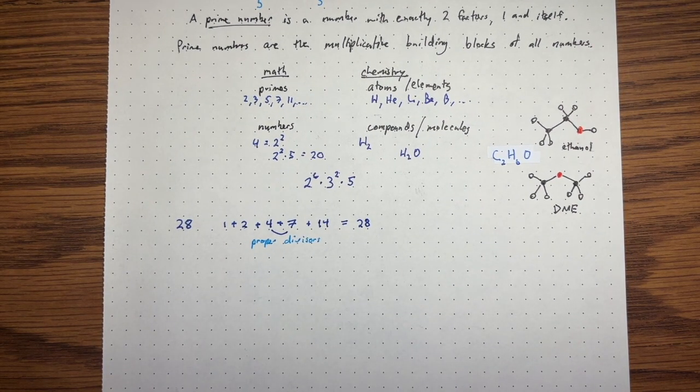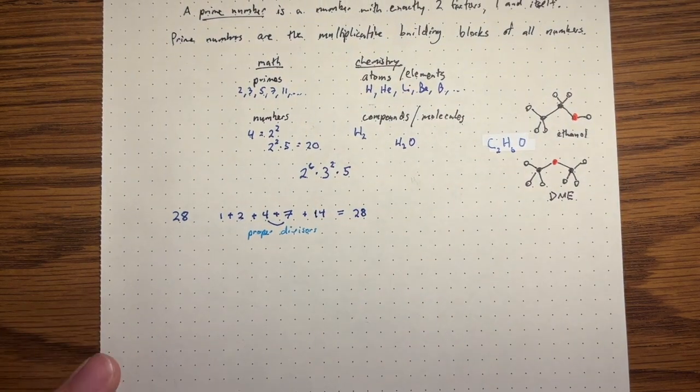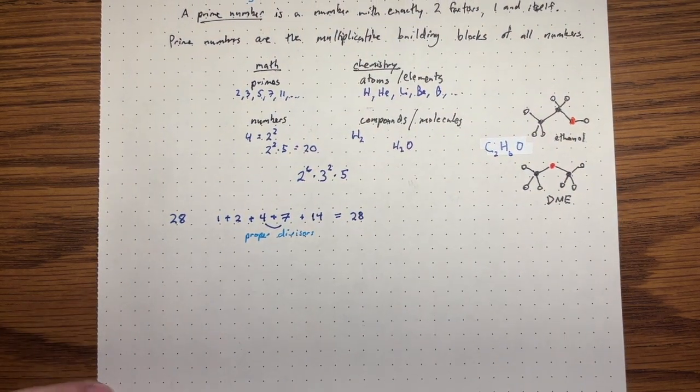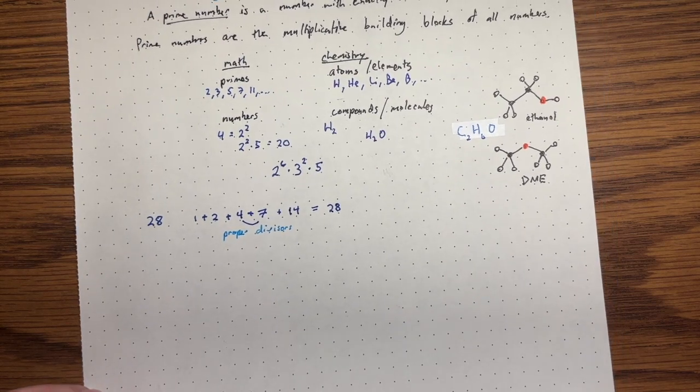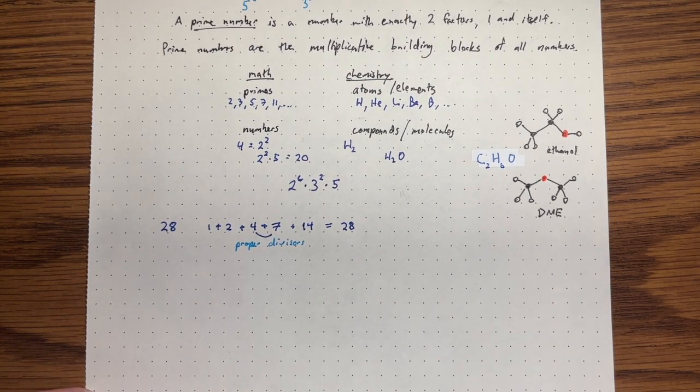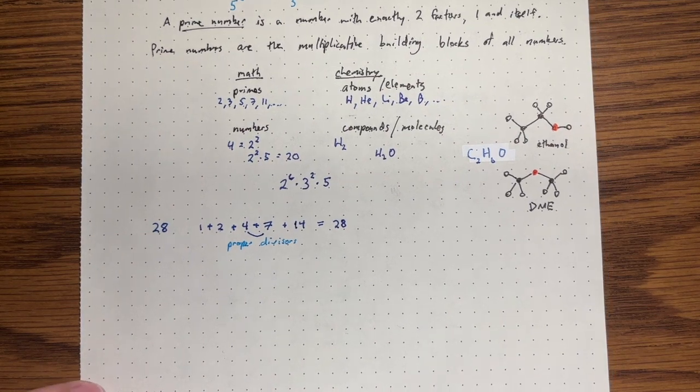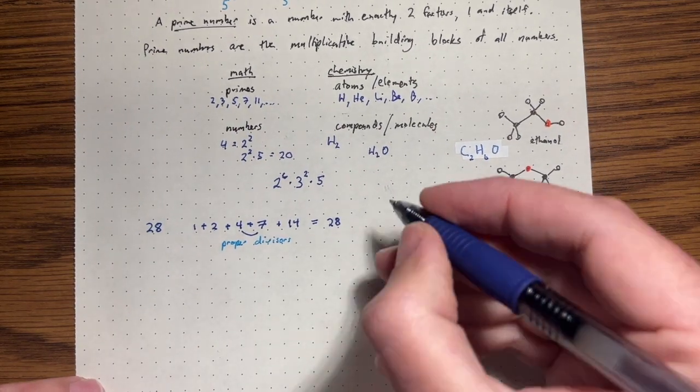Well, you might not think too much of that, right? Like maybe this happens all the time. Maybe it's not so interesting. But it turns out when you look for more numbers like this, it's pretty hard to actually find them. So there's only one other one less than a hundred, six actually. Six is one plus two plus three.